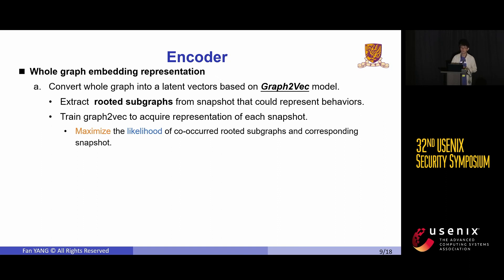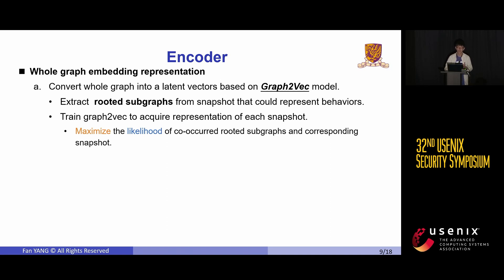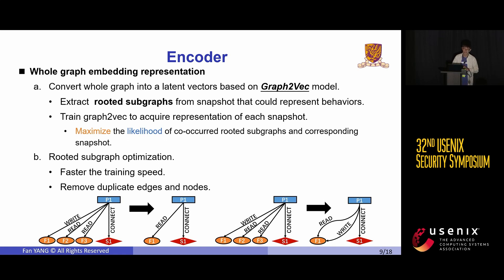Once the snapshot is built, we need to convert it into a representation vector while preserving key properties like graph structure information. With our motivation, we propose selecting subgraphs as features. Another advantage of doing so is that such nonlinear features could provide more powerful representation vectors than linear features like a path. To achieve this, we leverage a graph-to-vector model, which firstly extracts rooted subgraphs and then maximizes the co-occurrence likelihood during training. In other words, this model increases the co-occurrence likelihood of each snapshot and its rooted subgraphs while decreasing the likelihood of non-belonging rooted subgraphs. During training, we discovered that rooted subgraphs generated from large and dense graphs can contain too many redundant labels, so for efficiency, we only retain unique labels for each rooted subgraph by removing duplicate edges and nodes, as shown in this picture.